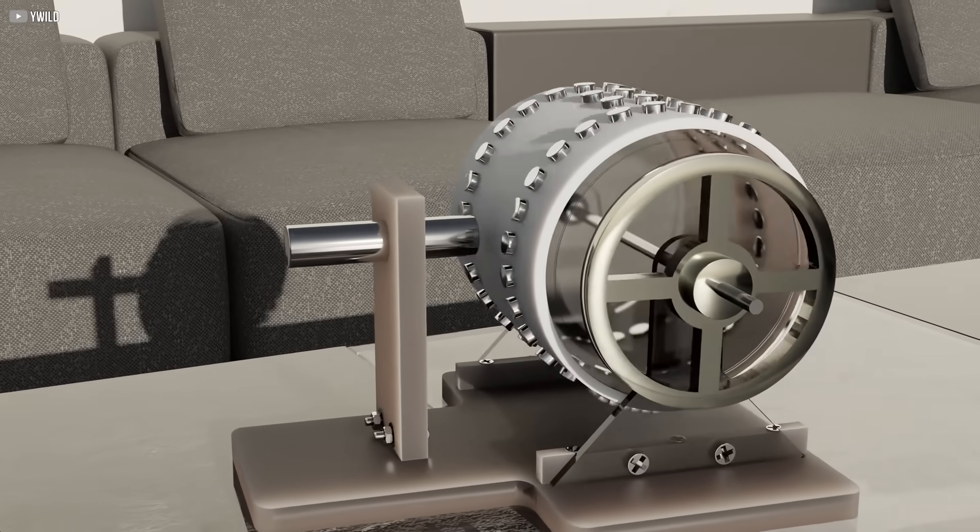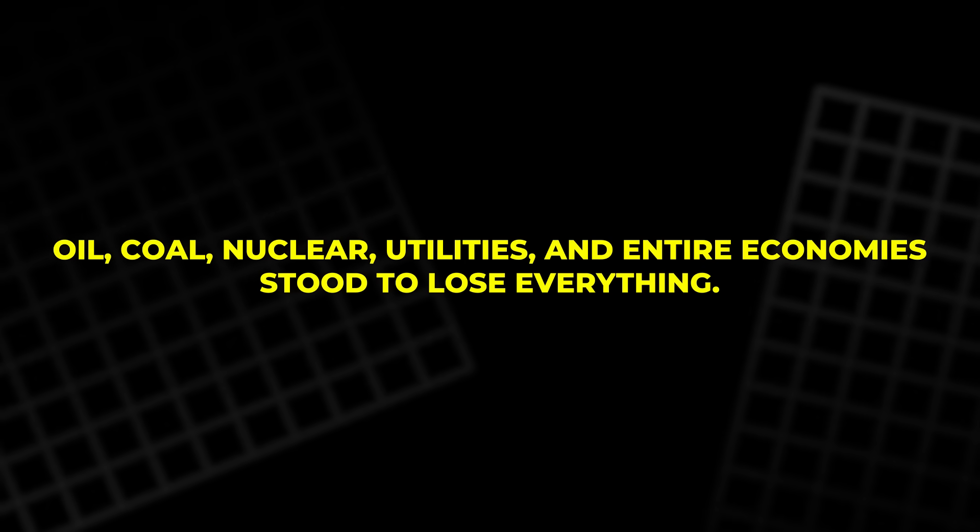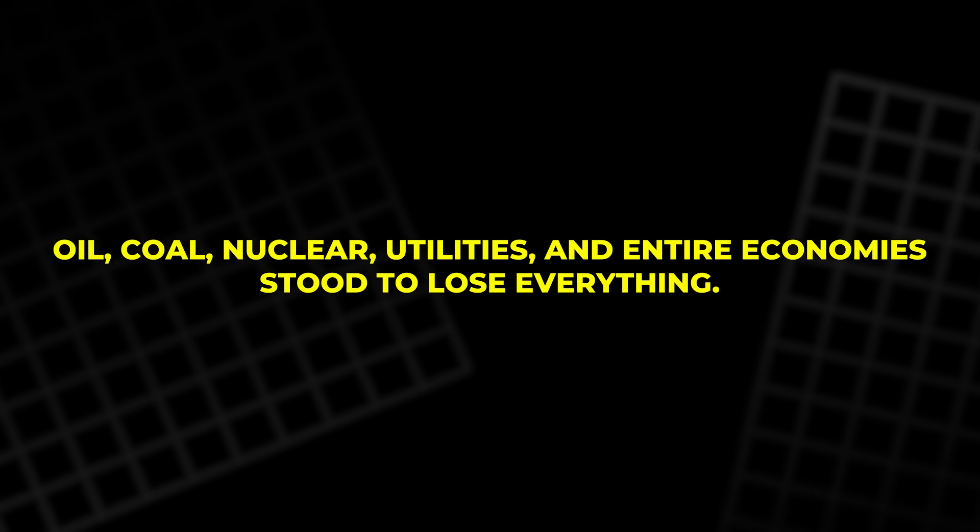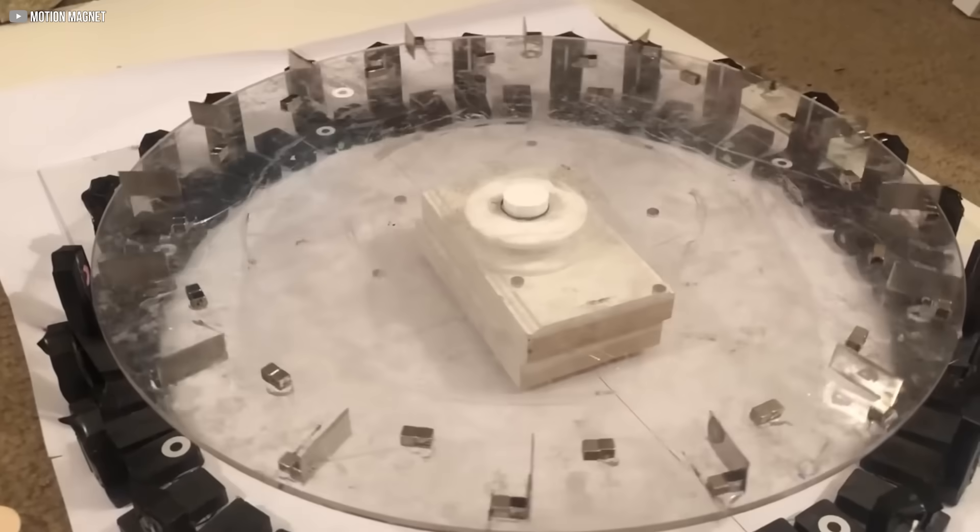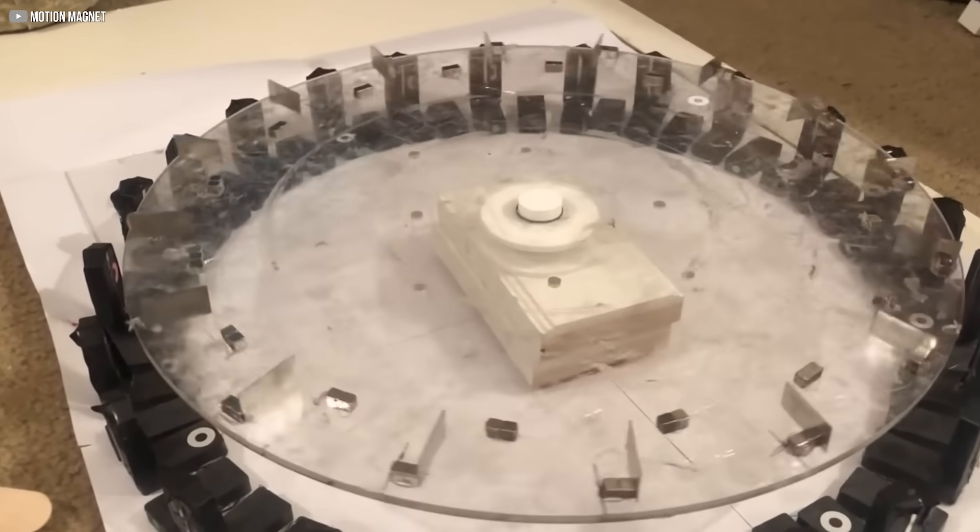His machine didn't just challenge science. It threatened trillion-dollar industries. Oil, coal, nuclear, utilities, and entire economies stood to lose everything. What unfolded wasn't a debate. It was a quiet erasure. Not with public attacks, but with red tape, missing evidence and fear. Johnson had built a machine that worked. And for that, they tried to make him disappear.